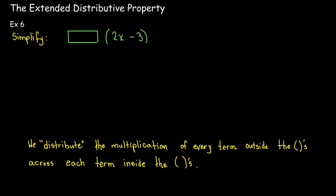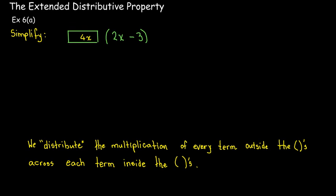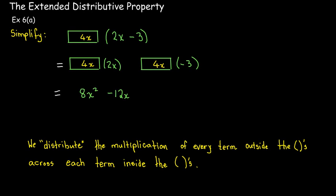Suppose that instead of a known term on the outside, I just have a box. We still distribute the multiplication by the box, because a box is a symbol just like an x or a y. So I'd have the box times 2x, and then the box times negative 3. For example, I could fill in the box with a single term like 4x, giving me 4x times 2x and 4x times negative 3, which when multiplied out gives 8x squared minus 12x.